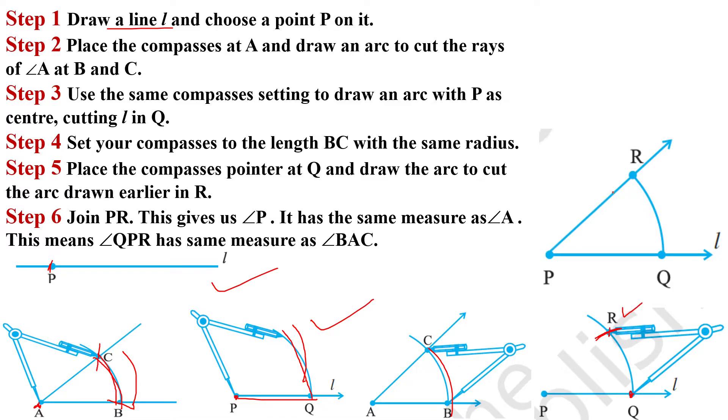Yeh dekhi, hum ne PR join kiya. Iska meaning yeh huwa, ki jo angle hamara R, P, Q bana hai, that is equal to the angle C, A, B.